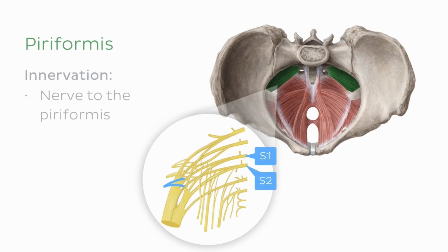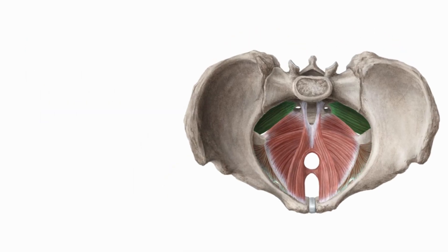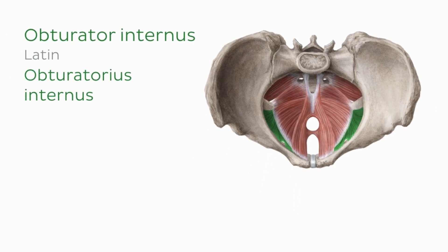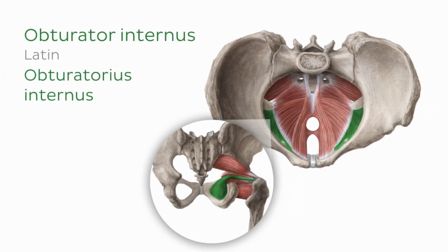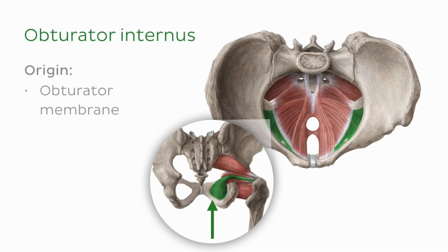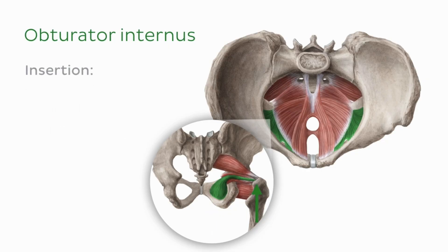The second muscle, which forms part of the anterolateral wall of the pelvic cavity, is the obturator internus. Similar to the piriformis, it originates within the pelvis and exits to insert on the femur. Specifically, the obturator internus originates from the posterior surface of the obturator membrane and the surrounding bone, and inserts on the greater trochanter of the femur.